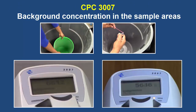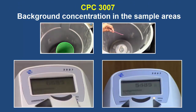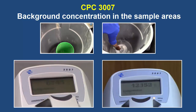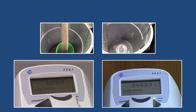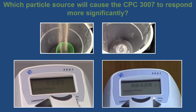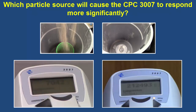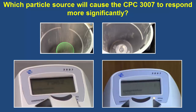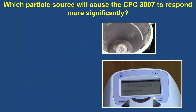The third direct reading instrument to observe is the condensation particle counter, or CPC, which measures number concentrations. Here are the background number concentrations of the two sample areas. And here are the particles generated by the cat litter and incense stick in the sample areas. There is a significant increase in number concentration from the incense stick. The CPC often reflects the presence of smaller or nanoparticles, being that these particles can be numerous in the air compared to larger ones.